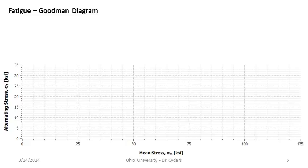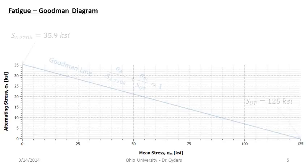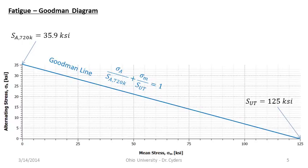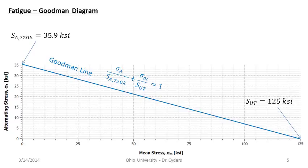The Goodman diagram describes the interplay of mean stress and alternating stress on failure at a given number of cycles. It shows how much weaker our part is in alternating strength based on an elevated mean stress at a given number of cycles. On the alternating stress axis, if the mean stress is zero, we have exactly the SN diagram situation — our point is 35.9 KSI at 720,000 cycles. As the alternating stress goes to zero, we have the static case with 125 KSI on the mean stress axis.